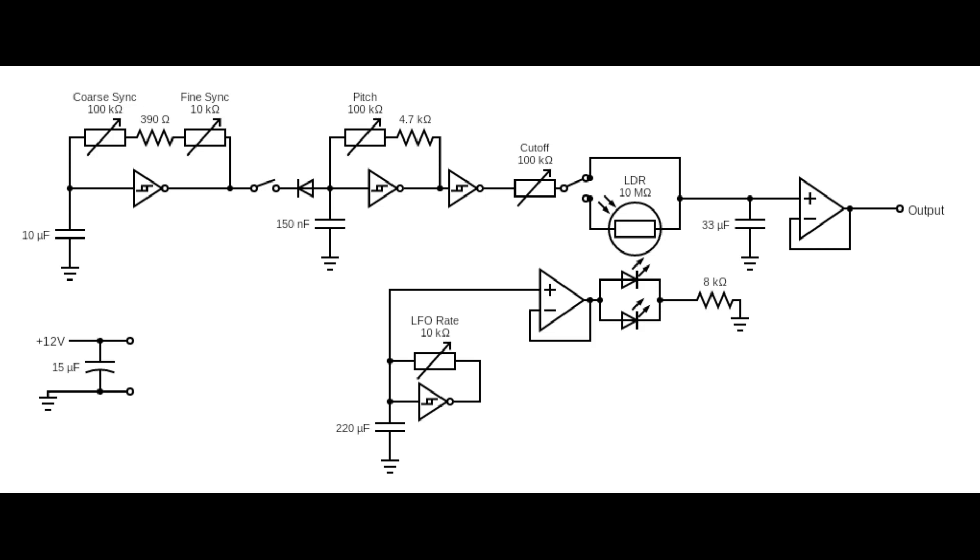Back at the cutoff knob, we've added a switch that also leads to a light-dependent resistor, LDR for short, the basis of our Vactrol-based LFO. The other essential part of a Vactrol is a light source, in this case an LED, that can fluctuate to modulate the resistance of the light-dependent resistor. In this configuration, it is replacing the cutoff potentiometer for the LDR when the switch is thrown.